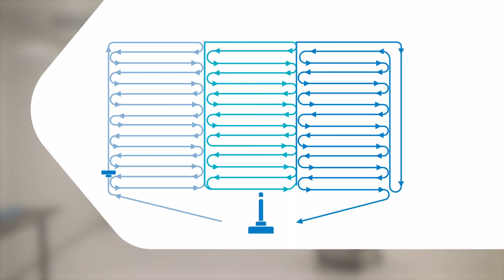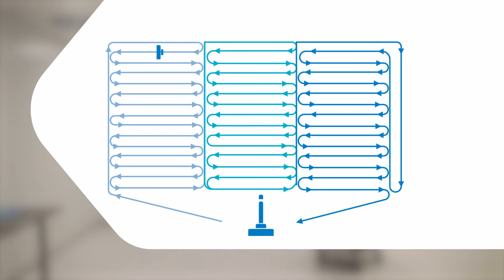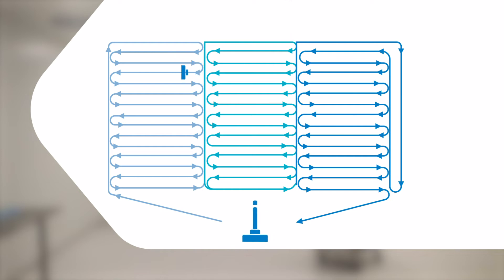When planning your space, also think about when and where you want to change the mop. To avoid contamination carryover, the wiping process is carried out from clean to unclean. Start at the furthest point in your room. This way, you avoid the danger of having to enter an already disinfected area and carry over contamination. At the same time, this procedure gives you the security of not forgetting an area.